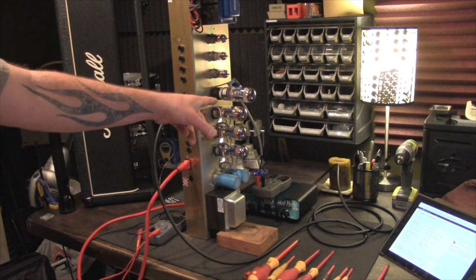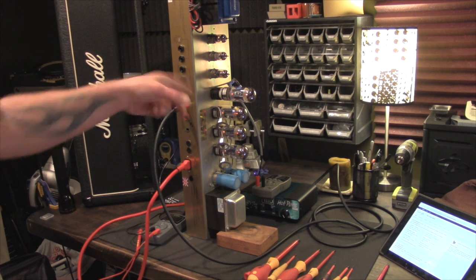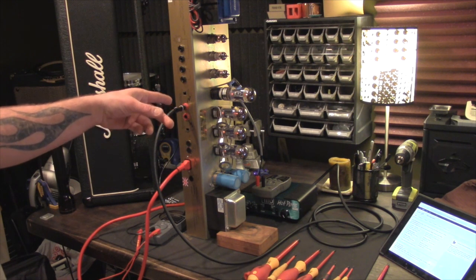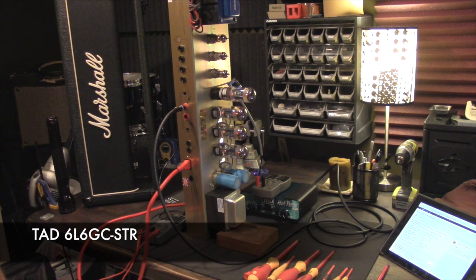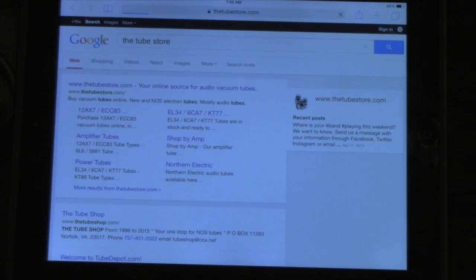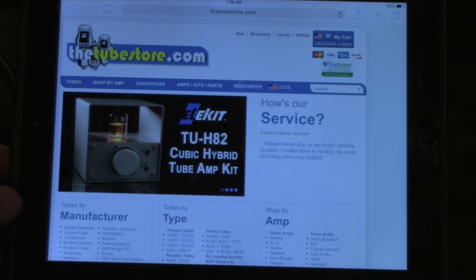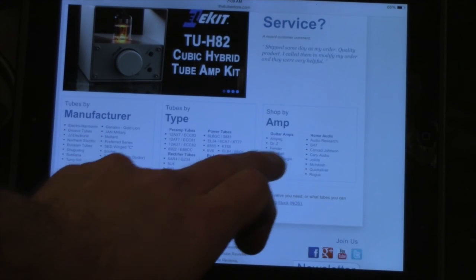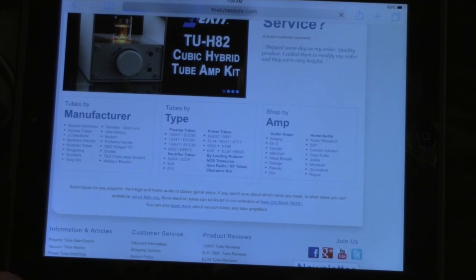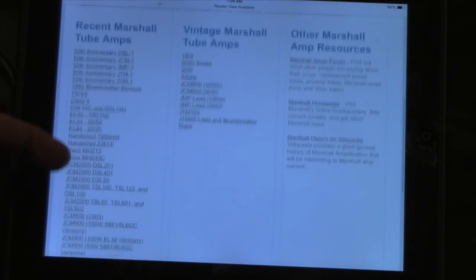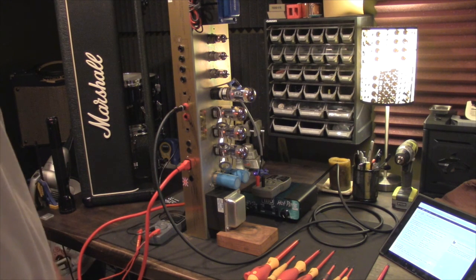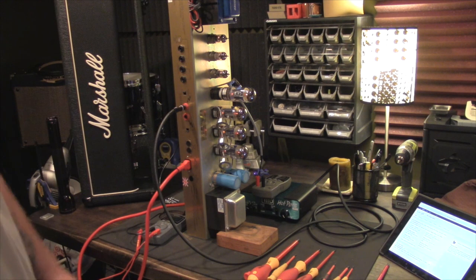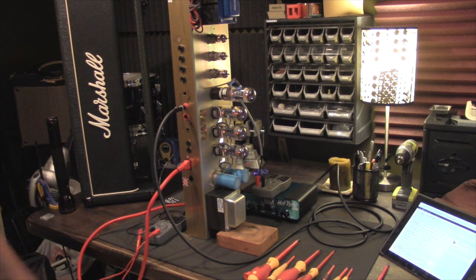I switched out the 5881 tubes with the TAD 6L6GC-ST power tubes. I have a match quad. I bought these tubes from tubestore.com, my favorite place to get tubes. You can search by amp model and find recommended packages for just about any amp. If you email those guys, they're quite awesome with answering questions. I've never had bad tubes from them, never had bad service.